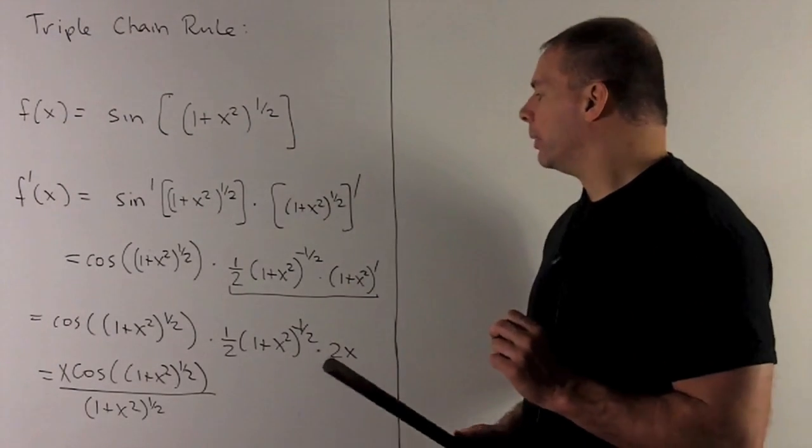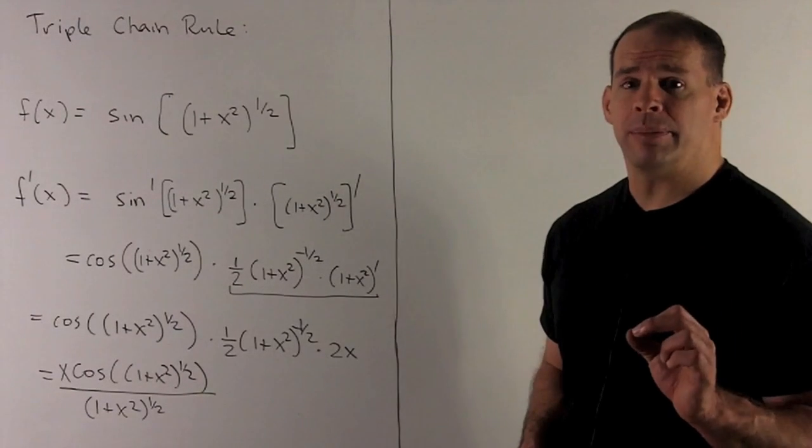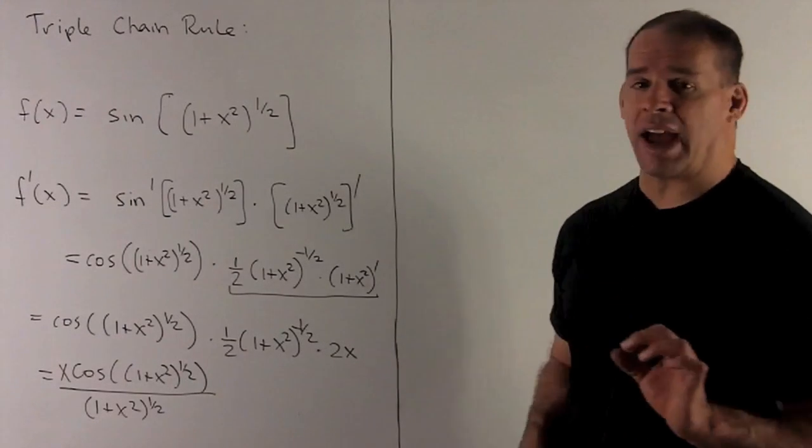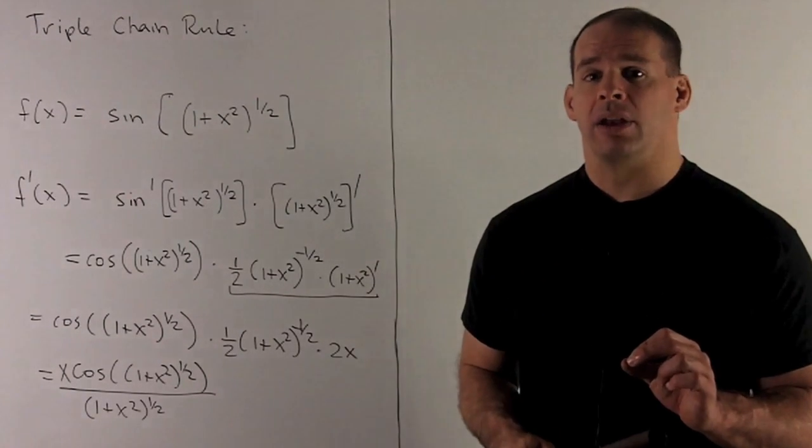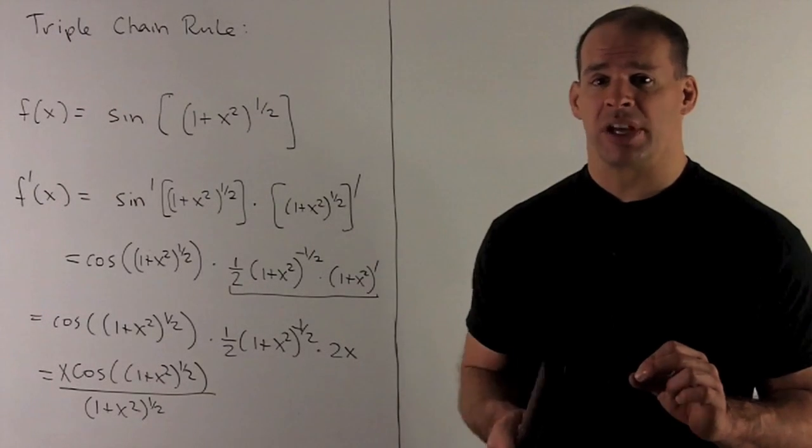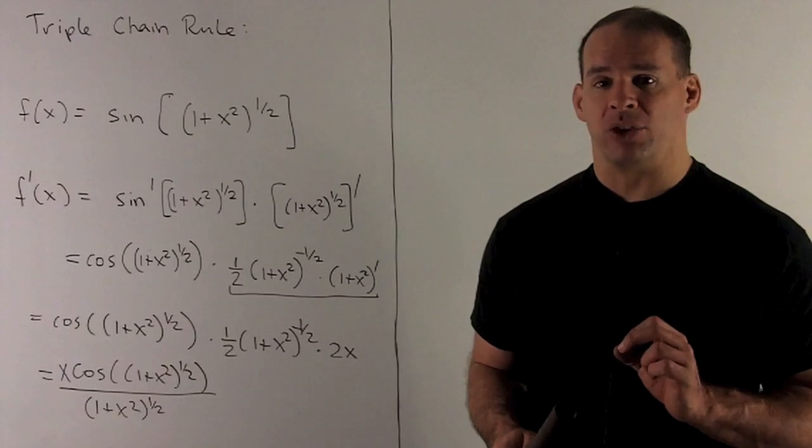Next term, what are we going to do? I want the derivative of 1 plus x squared to the 1 half. So, the idea is going to be this. I'm going to cover up the inside, the 1 plus x squared. 1 half comes down, minus 1 half for the new exponent. Then, we just stick our 1 plus x squared into there. And then, we have to multiply by the derivative of the inside.